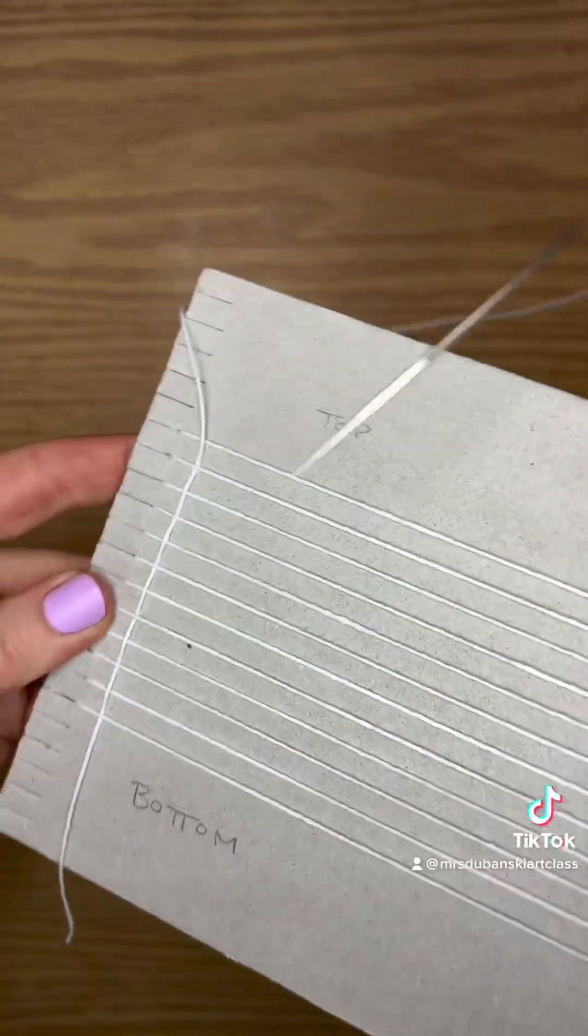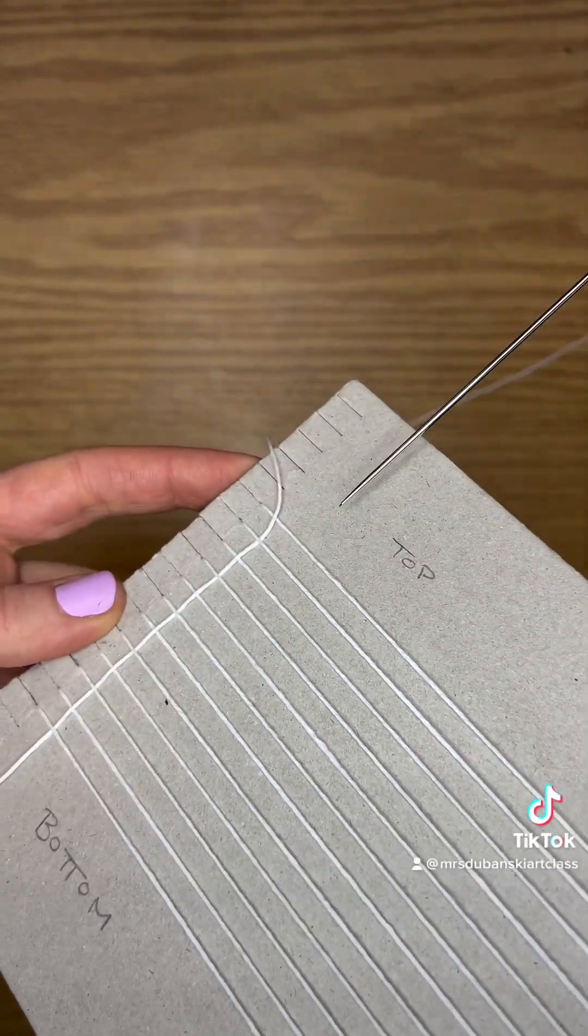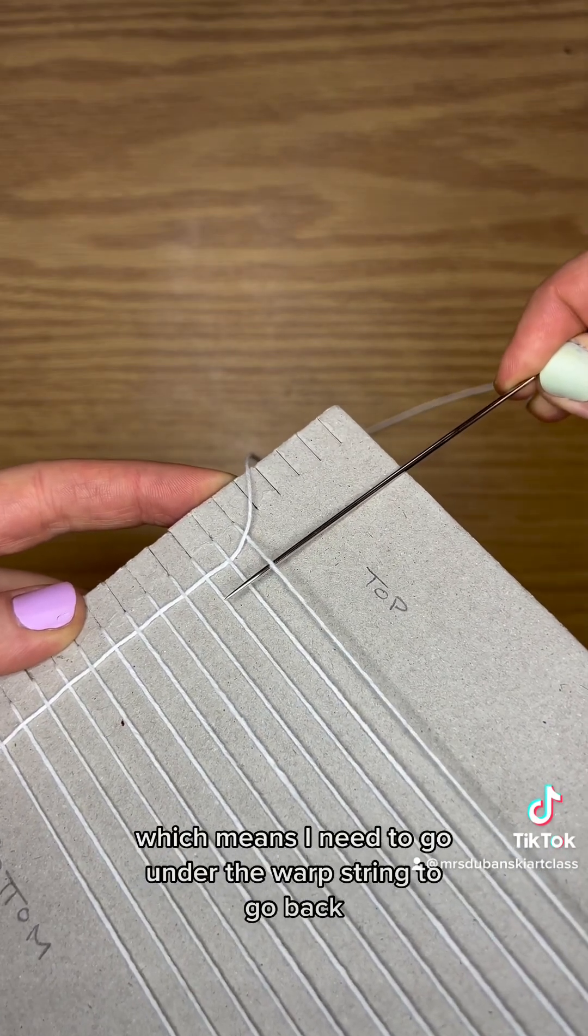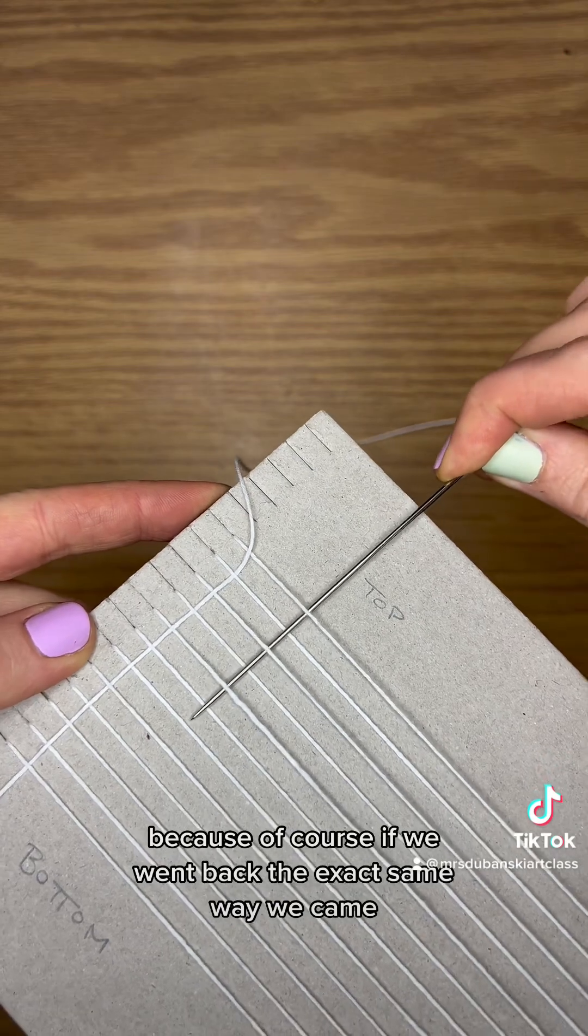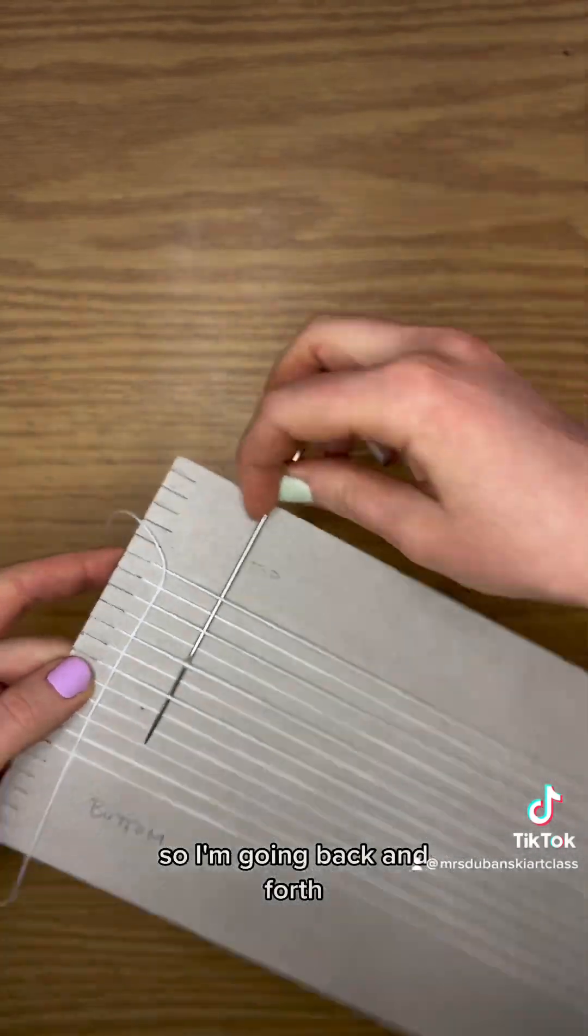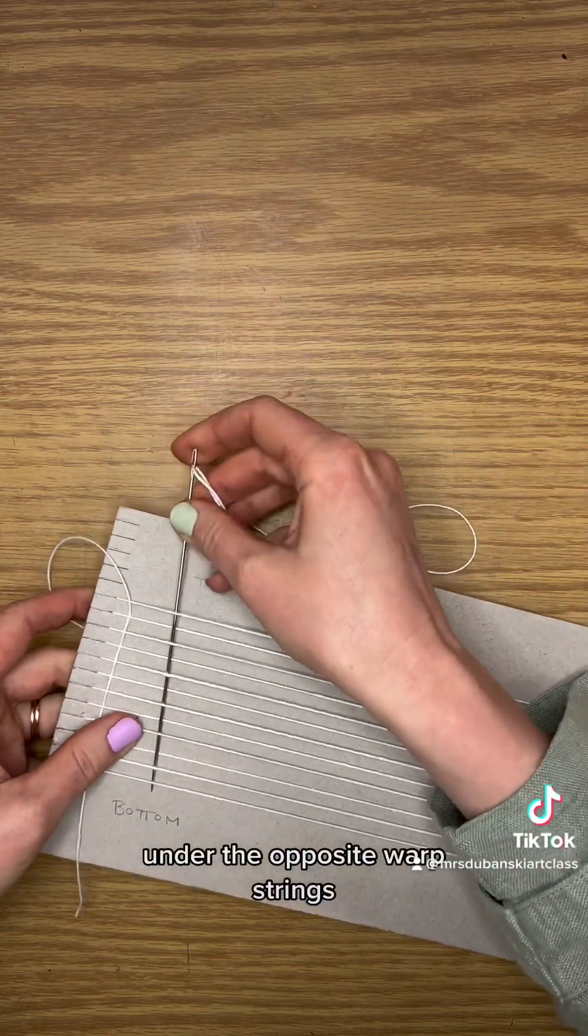So if you notice here, that top string, that last string that I went over that warp one, is over the warp string which means I need to go under the warp string to go back. Because of course if we went back the exact same way we came, it would just undo what we did. So I'm going back and forth under the opposite warp strings.